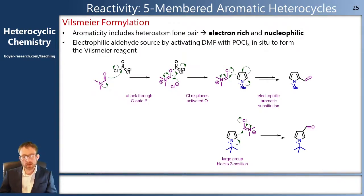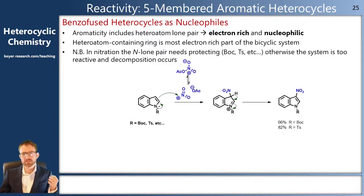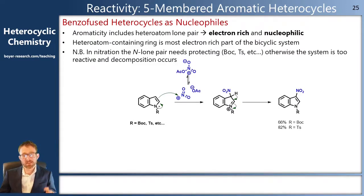When we switch to looking at the reactivity of our benzo-fused five-membered aromatic systems, we remember that the whole system has the same rules: the electrons used to make the aromatic system are made up of the lone pair, and therefore it's high energy and nucleophilic. But the most nucleophilic part of our system is on the ring with the heteroatom in it, so the five-membered ring is more nucleophilic and the all-carbon ring is less nucleophilic.